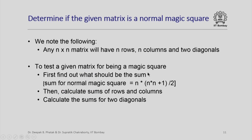Today we simply attempt to solve a problem: given an n by n matrix, we want to test whether it is a magic square or not. The algorithm is clear from the properties of the magic square. First, find out what the required sum should be — for a normal magic square of size n by n, the sum of each row, column, and diagonal is n times (n squared plus 1) divided by 2. Then calculate the sums of rows and columns, calculate the sums of two diagonals, and compare each with this value. If any sum differs, the square is not a magic square.